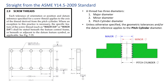To continue, it says: where an exception to this practice is necessary, the specific feature of the screw thread, such as the major diameter or minor diameter, shall be stated beneath the feature control frame or beneath or adjacent to the datum feature symbol as applicable. A thread has three diameters: the major diameter, the minor diameter, and the pitch cylinder diameter. Unless otherwise specified, as stated in section 2.9, the geometric tolerances and/or datum reference applies to the pitch cylinder diameter.